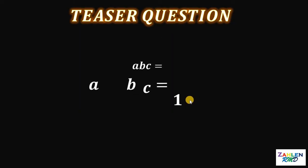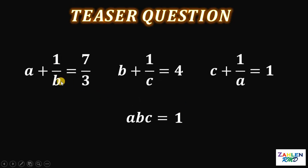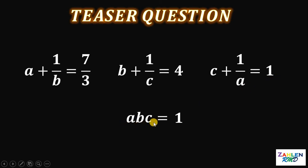Therefore, if A plus 1 over B equals 7 over 3, B plus 1 over C equals 4, and C plus 1 over A equals 1, then the value of the product ABC must be 1. And as always, we are done.